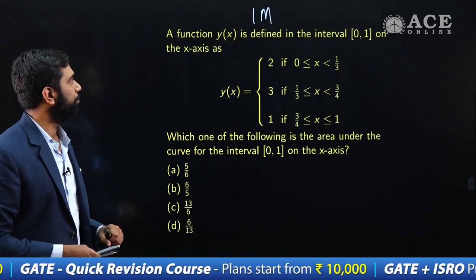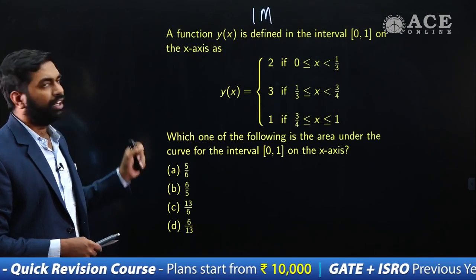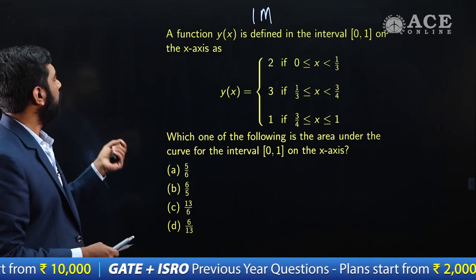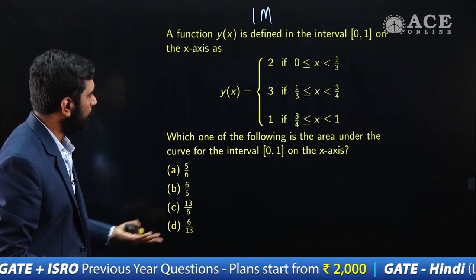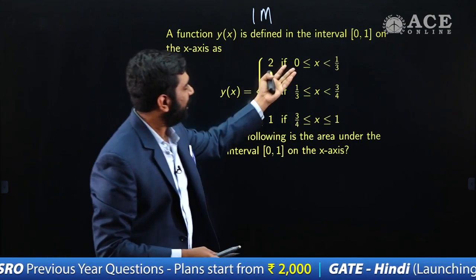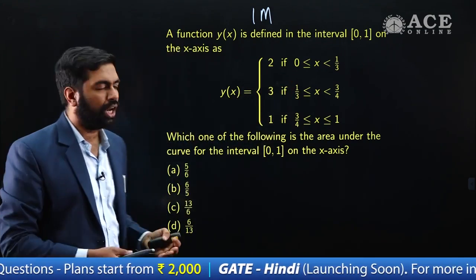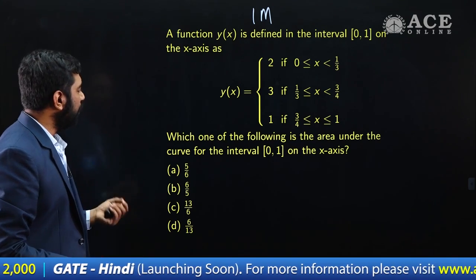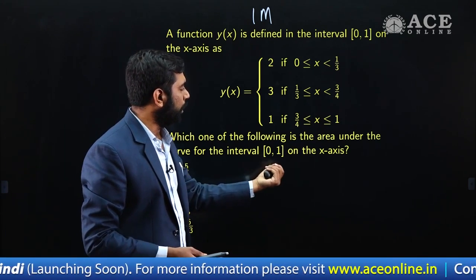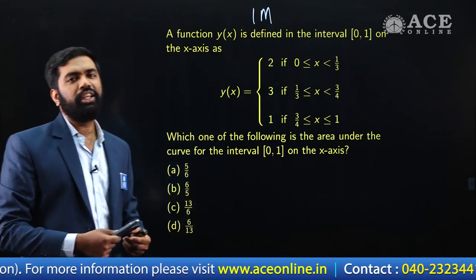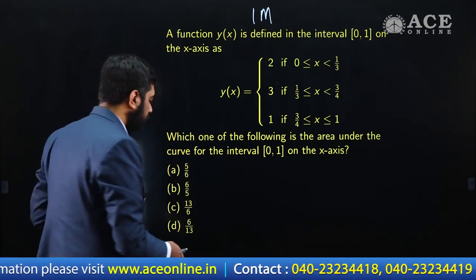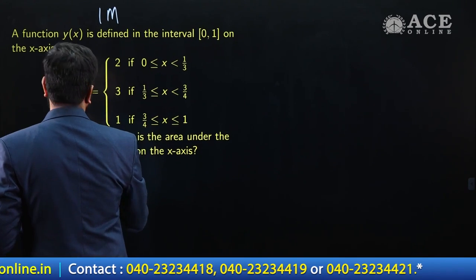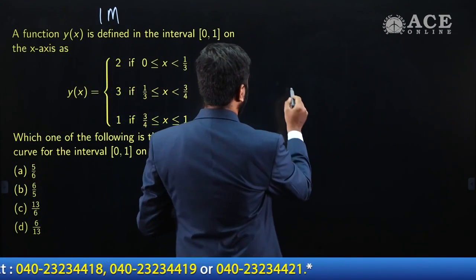Have a look at the first question. A function y(x) is defined in the interval 0 to 1 on the x-axis. It's a piecewise function they have given to us. They are asking: which one of the following is the area under the curve for the interval 0 to 1 on the x-axis? They are asking what is the area under y(x). For that, what you can do is first draw what y(x) looks like.